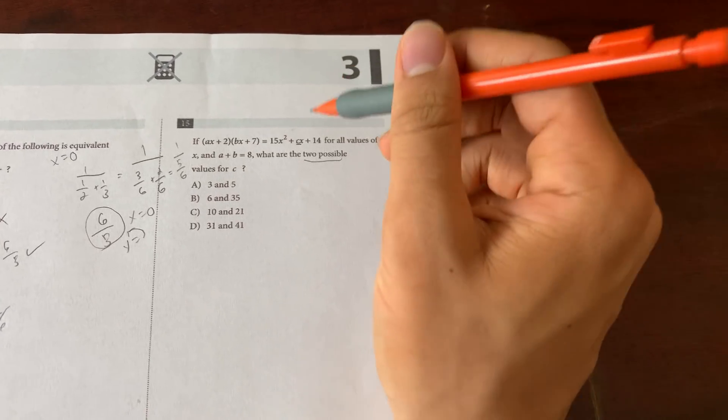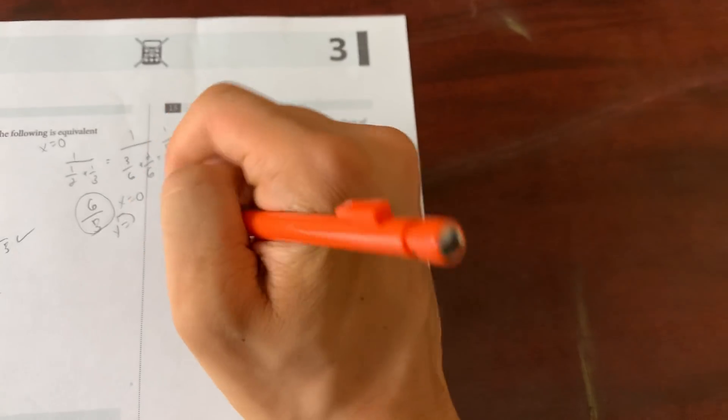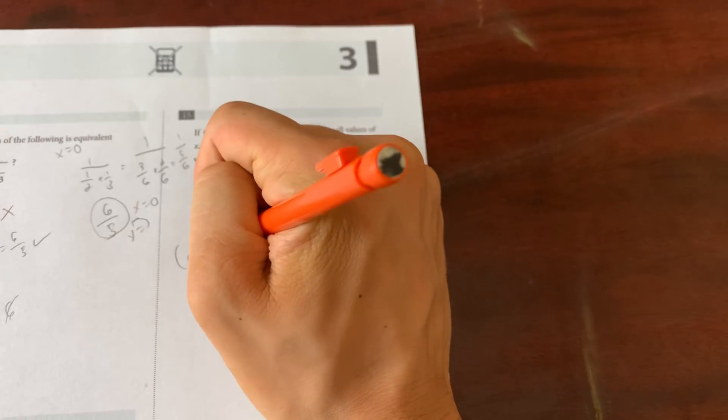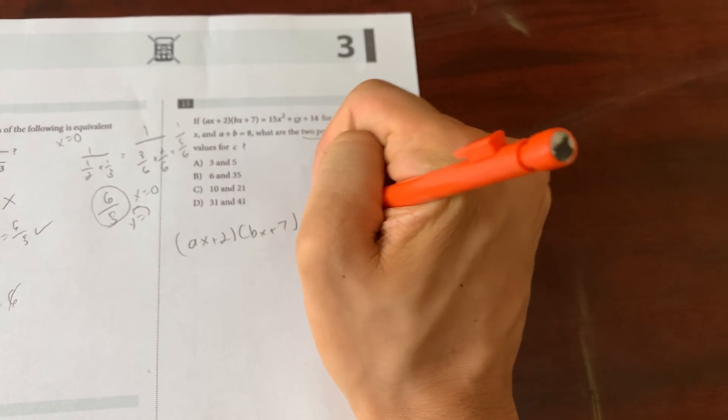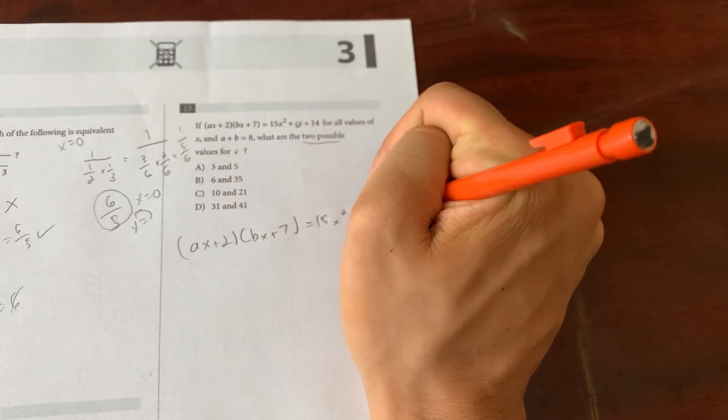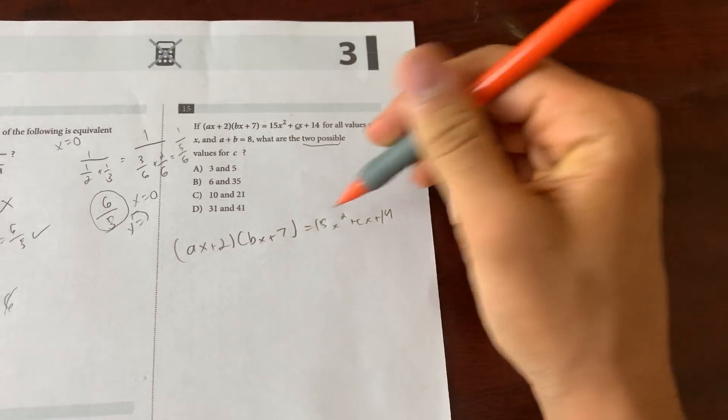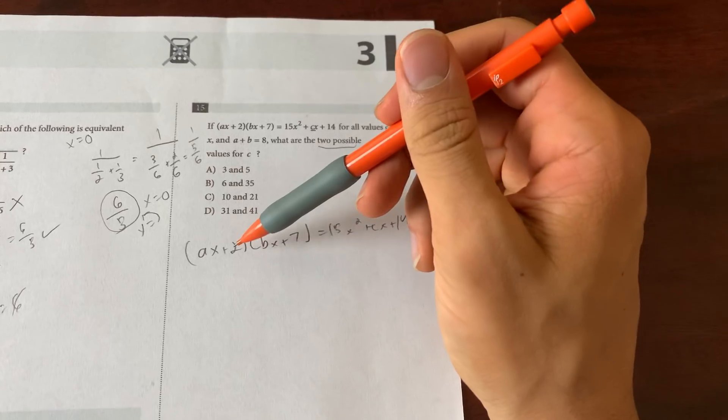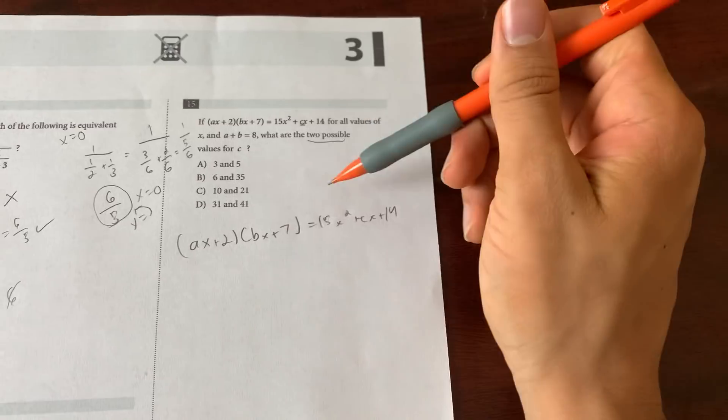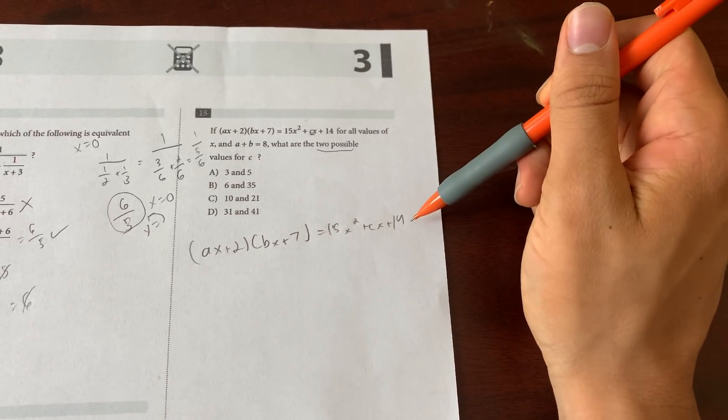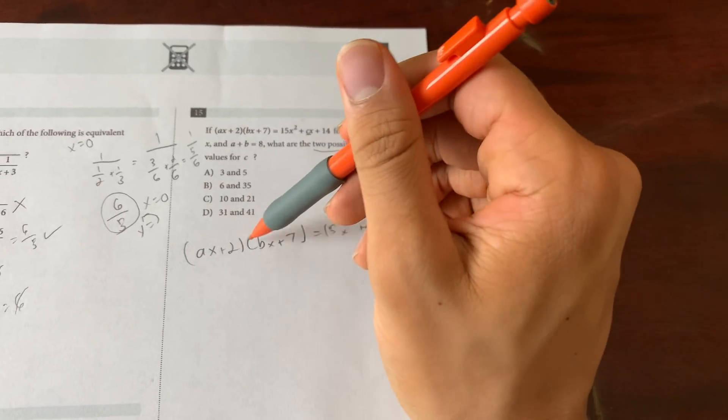So you know right now that there can be two possible values of c, and you know that (ax+2)(bx+7), I like to rewrite the main part, equals 15x² + cx + 14. So what is this telling me to do? I'm trying to distribute it out. Now how can I match the left side to the right side?